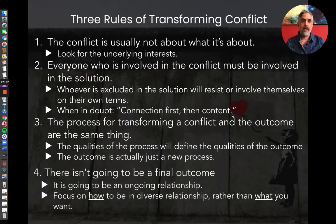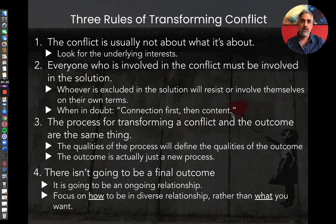This brings us to the fourth of the three rules of conflict: there isn't going to be a final outcome, especially around political and social issues. We're in an ongoing relationship with each other. It seems like we're all about ready to go to divorce court — the judge is going to decide who gets the kids, but no one's moving out of the house. We're still going to be in relationship with each other. So the question becomes not 'what do you want to see happen?' but rather 'how do we want to be in relationship with each other?'